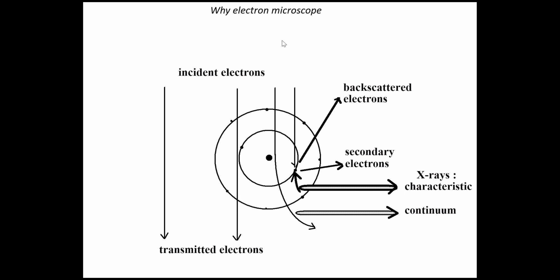Some electrons come out but are affected by the electrostatic field — since the electron is negatively charged and the nucleus is positively charged, the electron is retarded and can turn back. This is called a backscattered electron. Alternatively, it can come near the nucleus and, due to electrostatic forces, change direction without any collision — that is also backscattering. If the nucleus is very heavy, it has a high positive charge, making backscattering more likely. This contrast can reveal differences in atomic number across the sample.